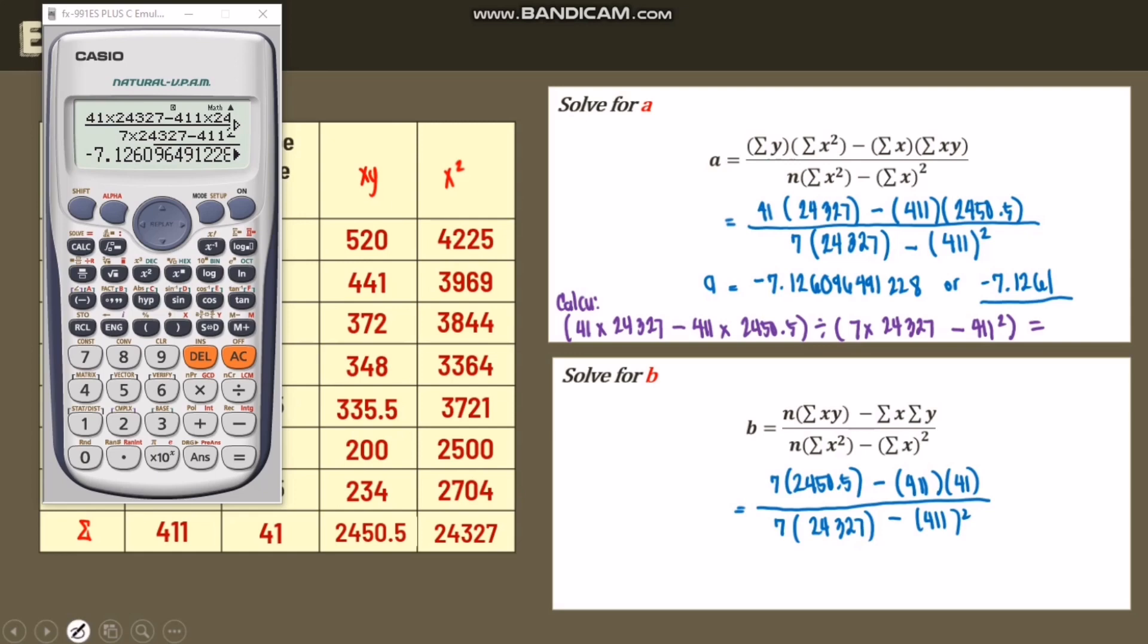All over 7 again and 24,327 minus 411 squared. And for the calculator, those with 2-liner calculators, how do we compute it? We have open parenthesis, 7 times 2,450.5 minus 411 times 41, close. Divide open, 7 times 24,327, and then minus 411 squared, close, equals.